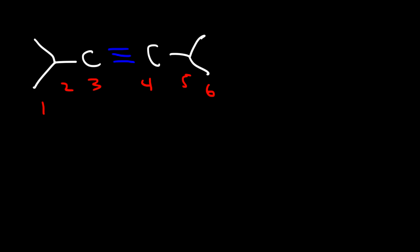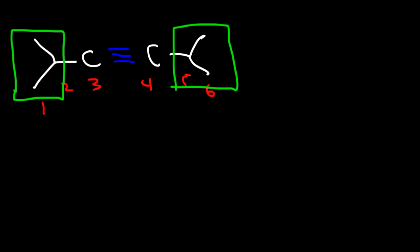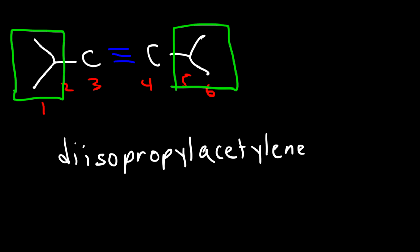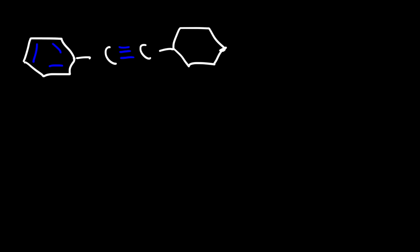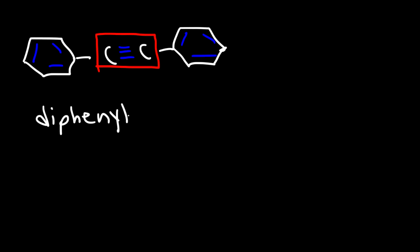Now what is the common name for this particular molecule? Notice that we have an isopropyl group on the left side and on the right side, so this is going to be called diisopropyl acetylene. And for the final example, we have two phenyl groups attached to the acetylene part, so it's simply going to be diphenyl acetylene.